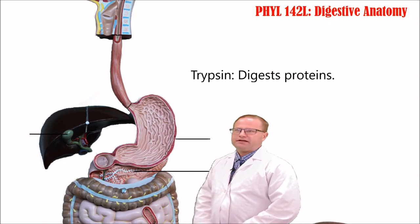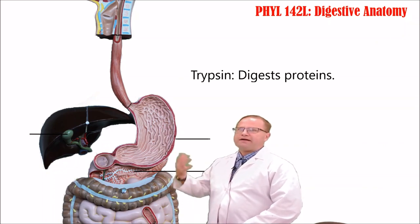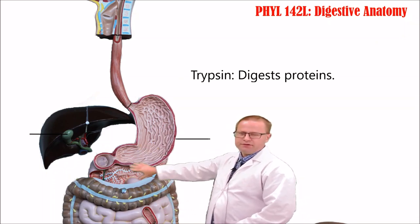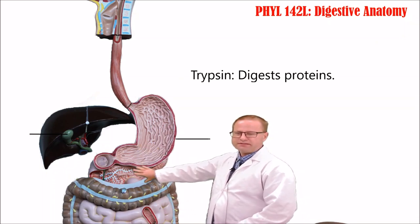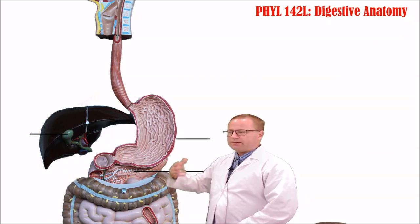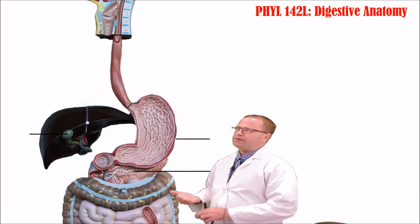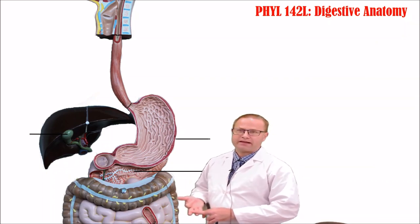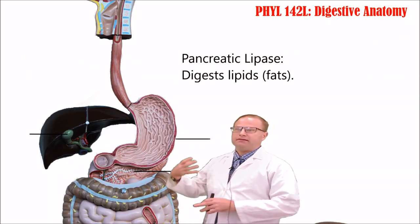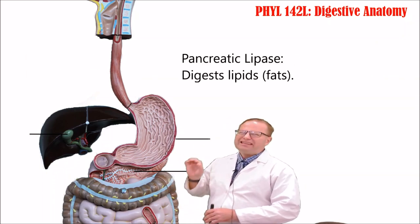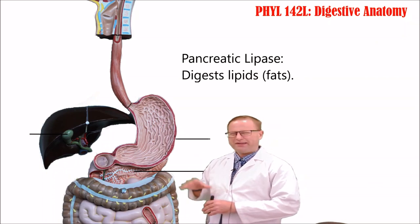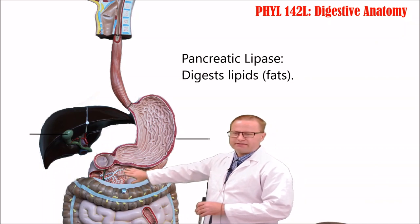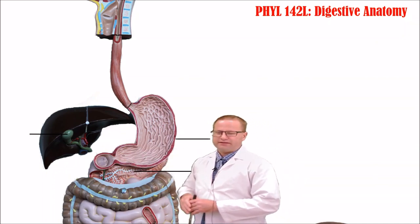The next pancreatic secretion is trypsin — another protein-digesting enzyme similar to pepsin. Why two enzymes? Pepsin works well in the stomach where pH is 2, while trypsin works well in the small intestine where pH is around 6 — they work better at certain pH levels. Another important secretion is pancreatic lipase, which breaks down lipids in the small intestine — the first really effective lipase, working alongside bile that emulsified those fats.